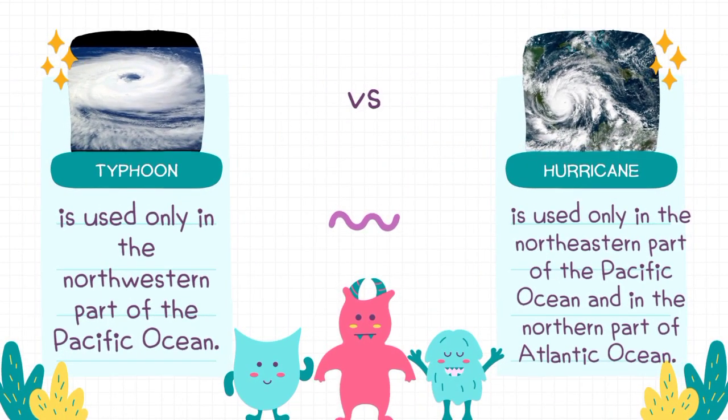The term typhoon is used in the northwestern part of the Pacific Ocean, while the term hurricane is used only in the northeastern part of the Pacific Ocean and in the northern part of the Atlantic Ocean.